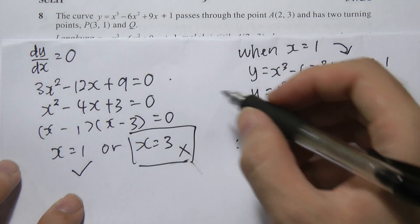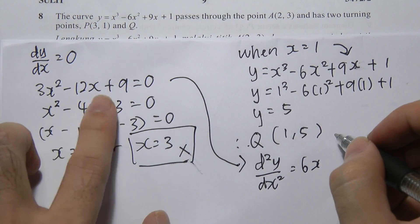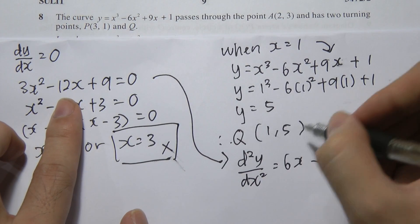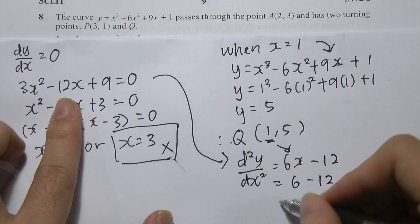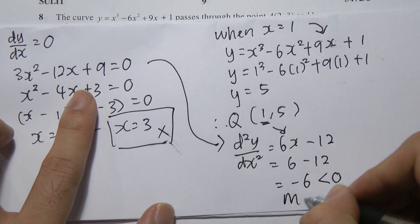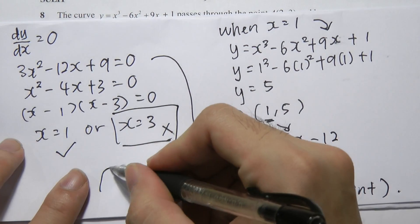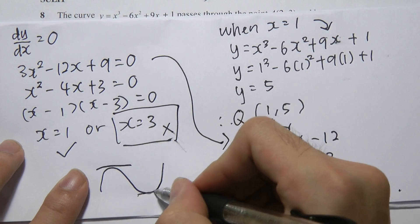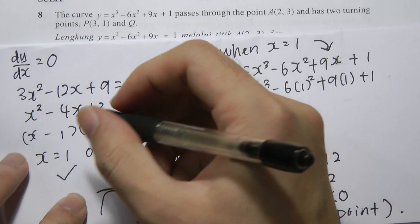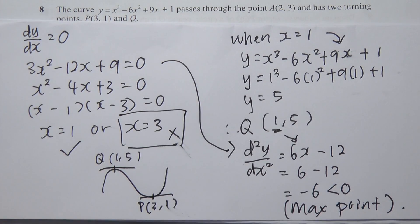To determine maximum or minimum, differentiate dy/dx one more time to get d²y/dx² = 6x - 12. At Q where x = 1: d²y/dx² = 6 - 12 = -6. Since -6 < 0, Q is a maximum point. The curve has a maximum at Q(1,5) and a minimum at P(3,1).